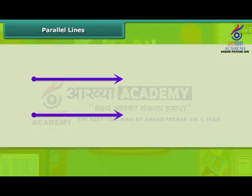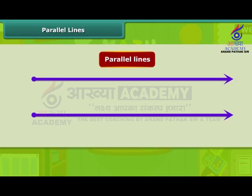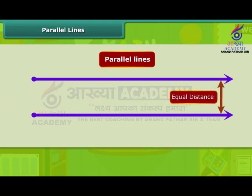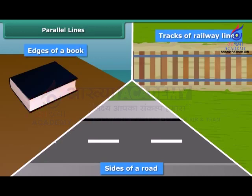Another set of lines are those which do not intersect. Such lines which do not meet at all are called parallel lines. The distance between these lines remains constant. Here, two lines L and M do not intersect, so they are parallel lines. A few examples of parallel lines from daily life include: sides of a road, tracks of railway lines, and edges of a book.